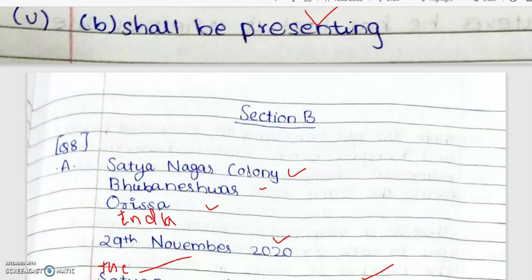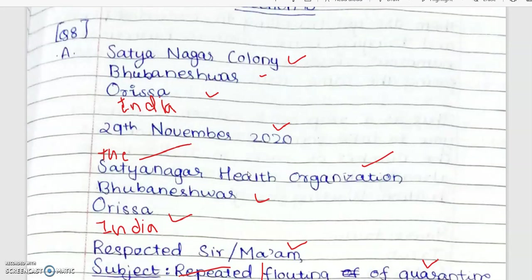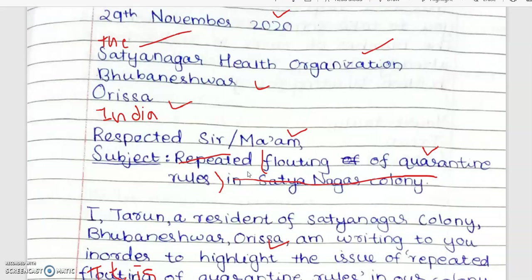Coming to the writing section, suggest how the student could have improved and what is missing. The letter is addressed to someone but we do not know who that person is, so kindly suggest what is to be termed the self-addressed recipient's address and how it can be improved. For the subject line, a flouting of quarantine rules should be underlined — only that should be the subject.